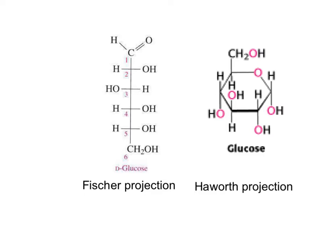More than 99% of the time, the molecule of glucose is going to be found as a cyclic hemiacetal.